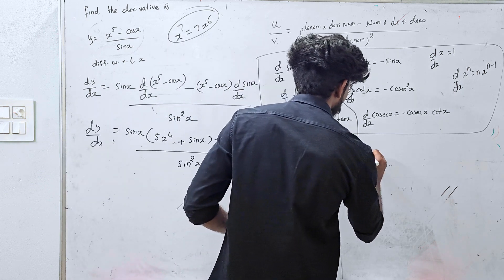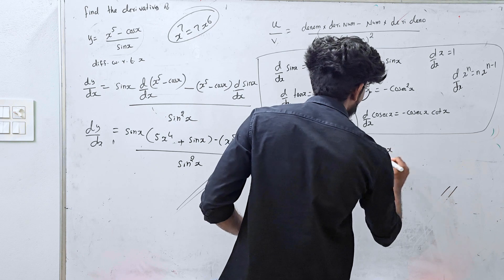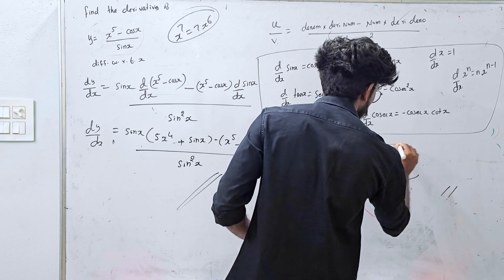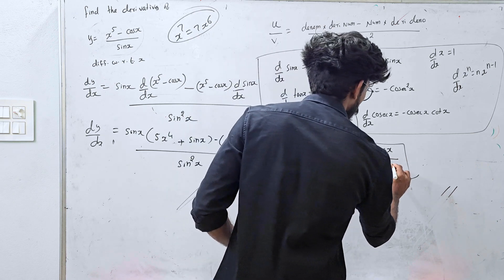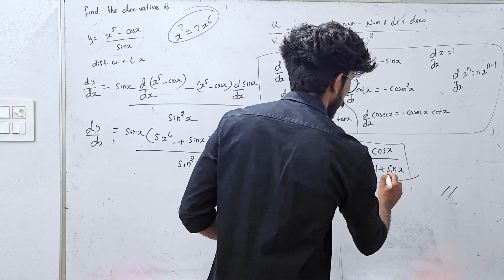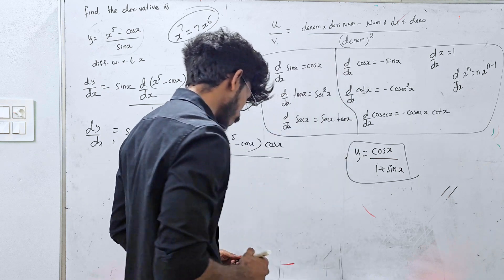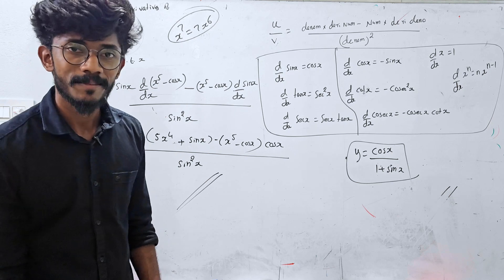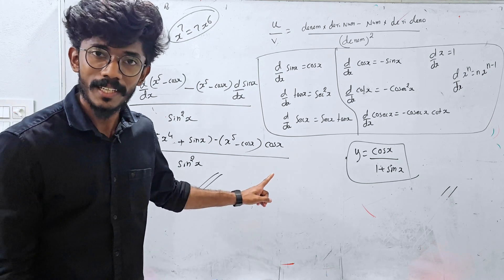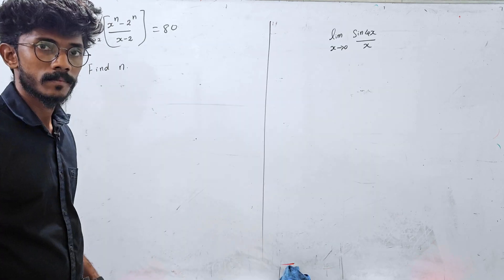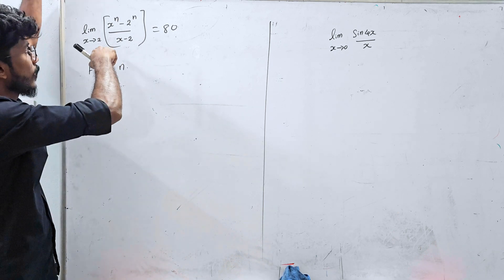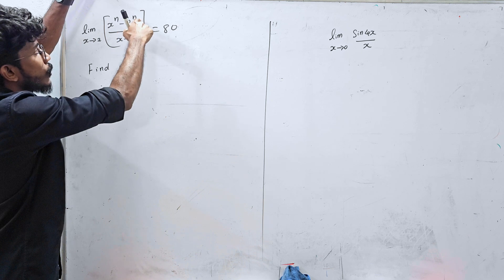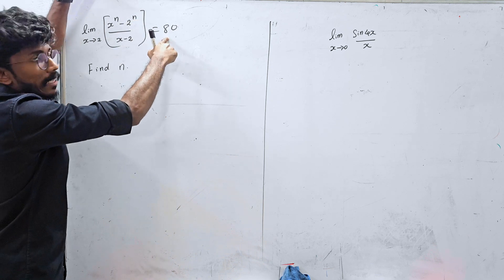Derivative of cos x / (1 + sin x) — you will do this derivative to get confidence. Now let's look at the next question: limit x tends to 2, (x^n − 2^n)/(x − 2) = 80. How do I do it?